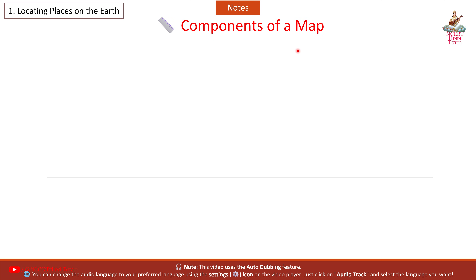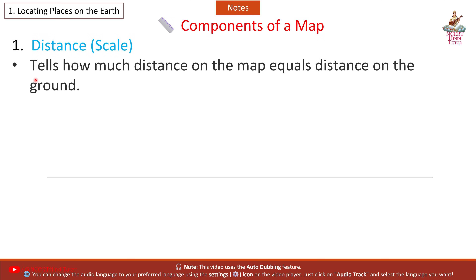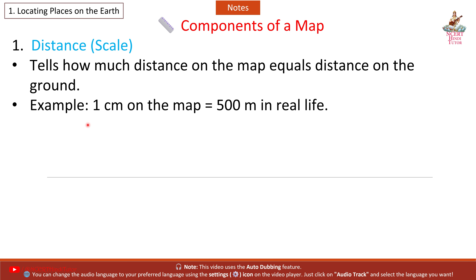Components of a Map. First, Distance — Scale: tells how much distance on the map equals distance on the ground. Example: 1 cm on the map is equal to 500 m in real life.